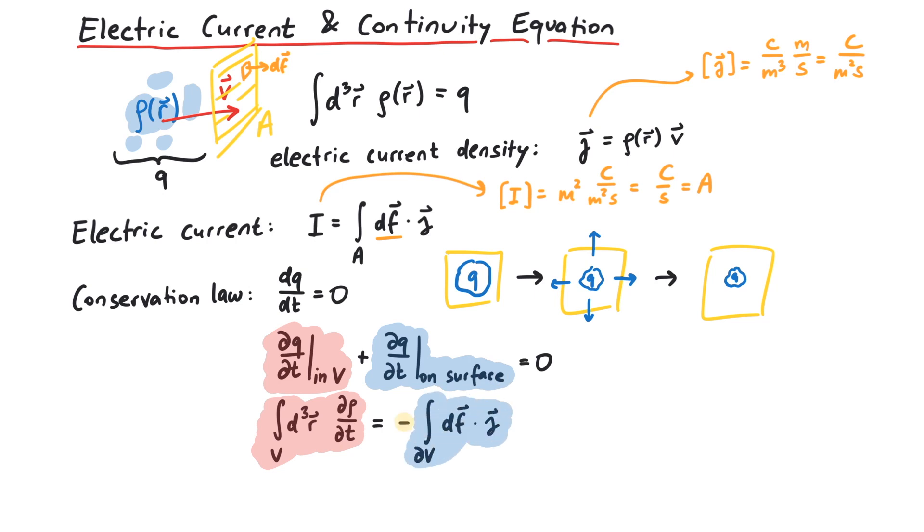Let's stop for a moment and consider the minus sign. Remember that df points outwards of the volume. Now if q decreases, the value on the left-hand side of the equation is negative. And if q decreases, this must mean that the current density flows out of the volume.